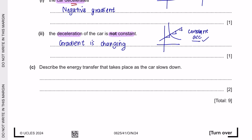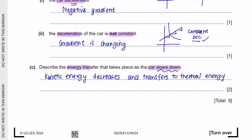Question C: describe the energy transfer that takes place as the car slows down. If the car is slowing down, this means kinetic energy decreases and is transferred to thermal energy — which is why the tyres and car become very hot.